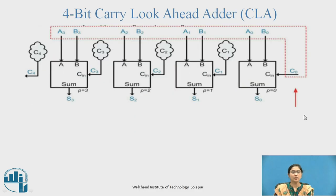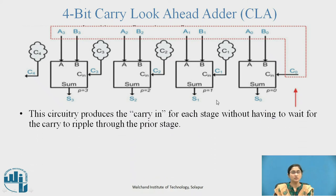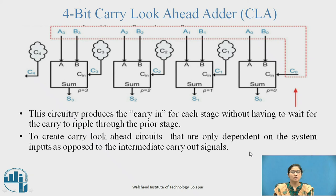In the 4-bit Carry Lookahead Adder, the structure is similar to the RCA with 4 full adders located at positions 0, 1, 2, and 3, but here the carry of the preceding stage is not directly passed to the next adder. Instead, circuitry produces the carry-in for each stage without having to wait for the carry to ripple through the prior stage, creating carry lookahead circuits that are only dependent on the system inputs as opposed to intermediate carry-out signals.